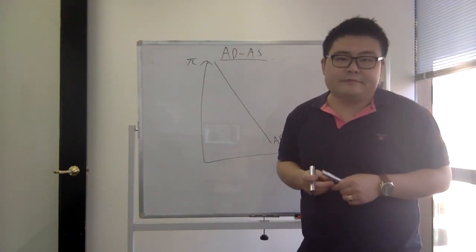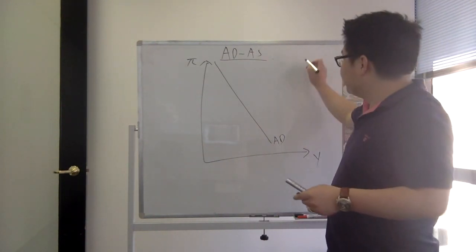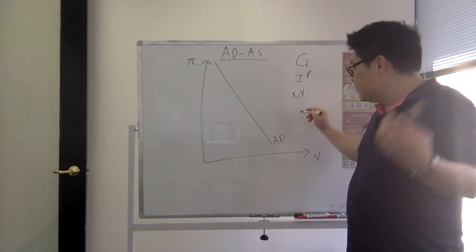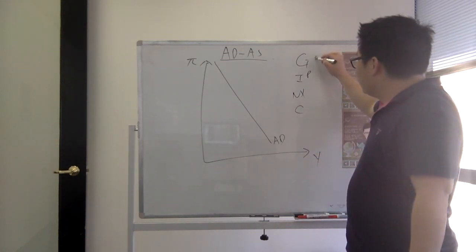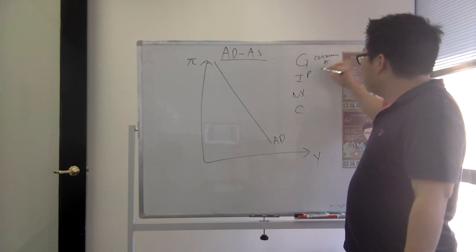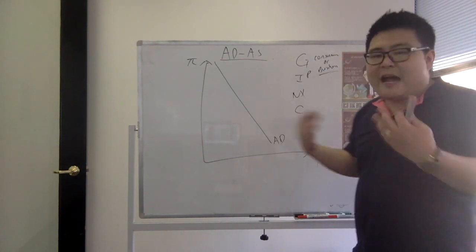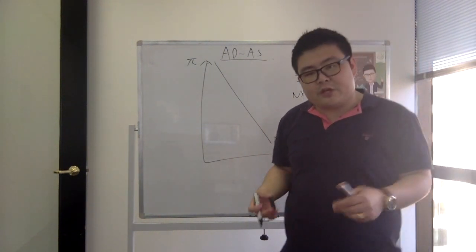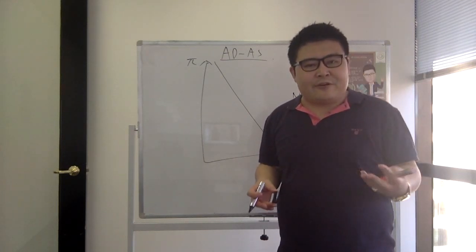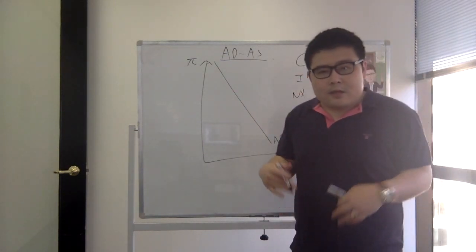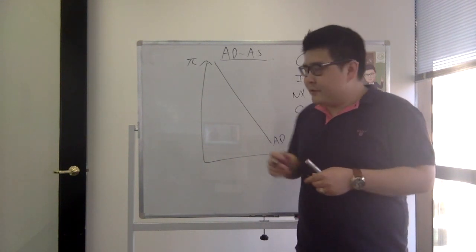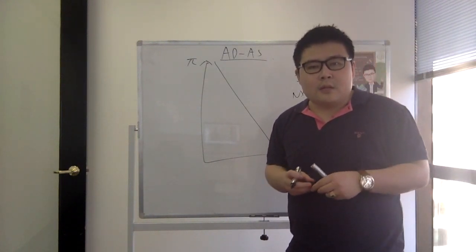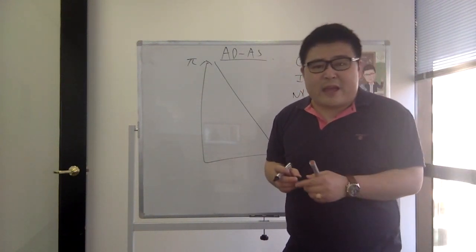What actually shifts the AD curve? Any expenditure change such as in G, plant investment, net exports, or consumption — maybe a change in consumer confidence or business confidence — will actually shift the aggregate demand curve. For example, if there is a massive boost in consumer or business confidence, the AD curve will shift to the right. Hypothetically, if there's a sudden decrease in plant investment, the AD curve will shift to the left. It really depends on what type of shock we have in terms of AD.